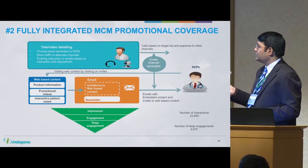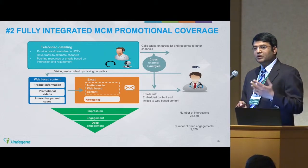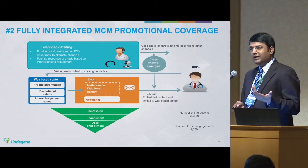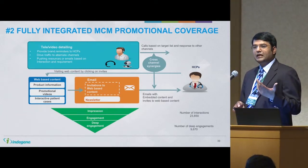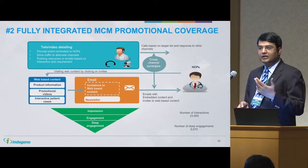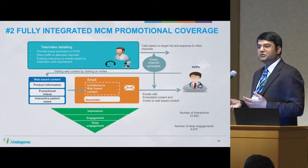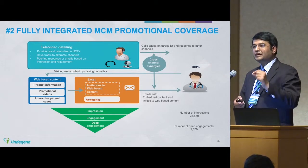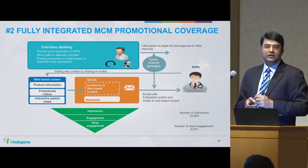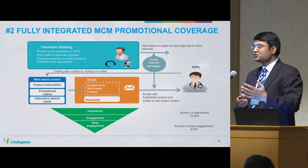As you can see, the total number of interactions were to the tune of 23,000 and plus. What I mean by interactions is that emails were sent to the participants and they opened and read the message. Deep engagement is when they could connect with the remote detailing person who could do live video detailing — so that is a deep engagement, not just a superficial one.